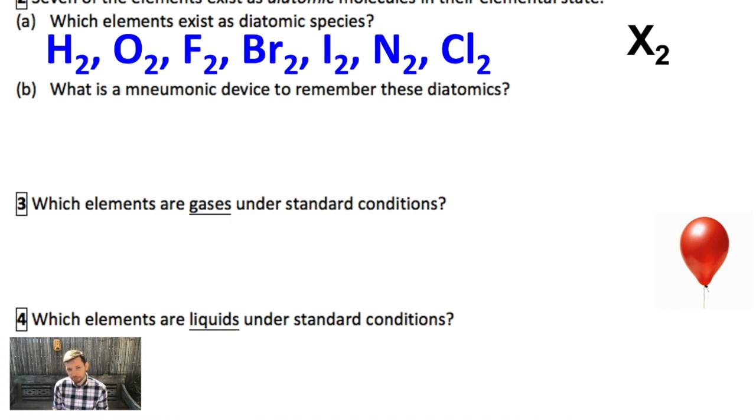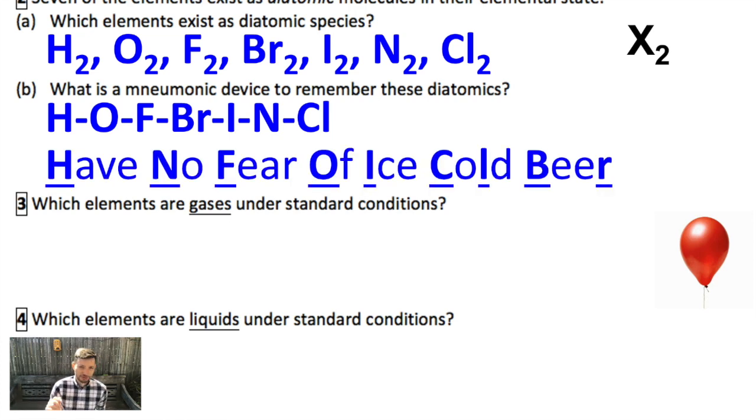And there are some mnemonic devices to remember them. You can actually just spell that out as if it's a made up word and say it. Hoffbrinkel is one thing. Alternatively, I've been taught by some colleagues that you can have no fear of ice cold beer. That spells out the initials hydrogen, nitrogen, chlorine, oxygen, iodine, chlorine, and bromine.